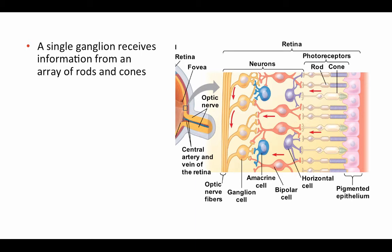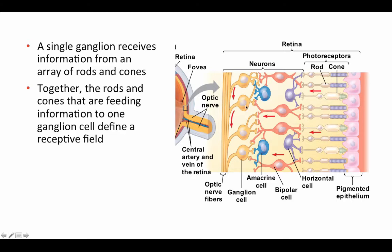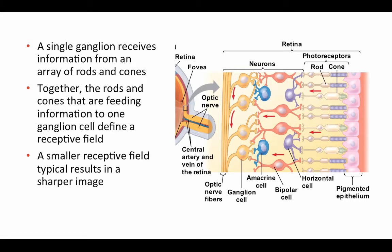This improves the contrast of an image and allows you to see greater detail. A single ganglion cell receives information from an array of rods and cones — the ganglion cells join all their axons together and travel to the brain via the optic nerve. Together, the rods and cones feeding information to a single ganglion cell define a receptive field, corresponding to some part of the visual field. Think of this as a single pixel on your computer. Having a larger number of smaller receptive fields typically results in greater resolution and a sharper image.